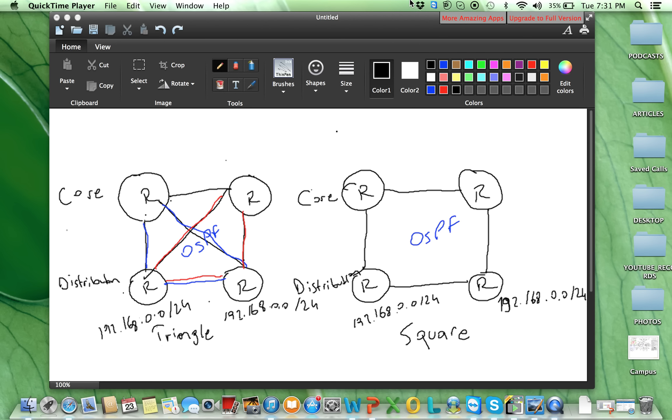Why you may want to use triangle topology instead of square topology? On the left side, I draw triangle topology and on the right side, you see square one.